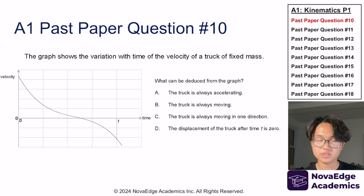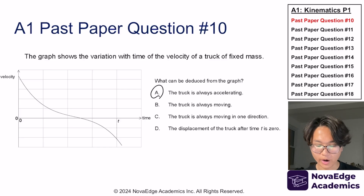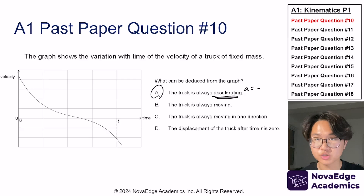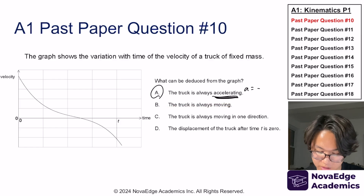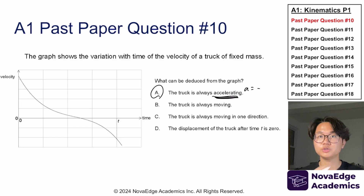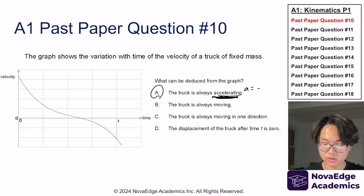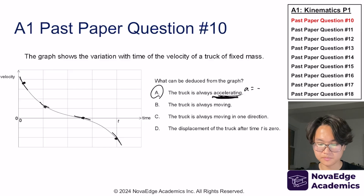Now let's try this question from past paper for topic A1. If you answered A, you are absolutely correct. The reason is mostly because the other options are not correct. B says the truck is always moving — incorrect, because at one point velocity is zero. C says the truck is always moving in one direction — not correct, because velocity is positive then negative, meaning it switches direction. D says displacement after time t is zero — but the positive area is way bigger than the negative area. So the only correct answer is A: the truck has a constant negative acceleration throughout, because the slope at any point is always negative.